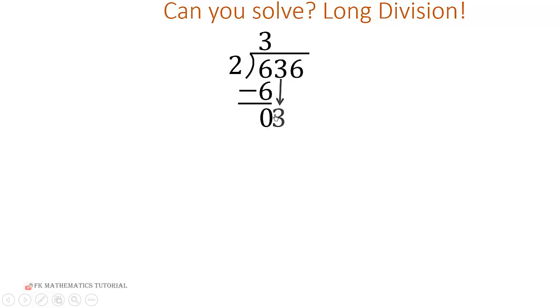So how many groups of 2 tenths can be found in 3 tenths? We can find only 1 group. So 2 times that 1 group gives us 2 tenths. Then we can perform the subtraction: 3 tenths minus 2 tenths will be 1 tenth.